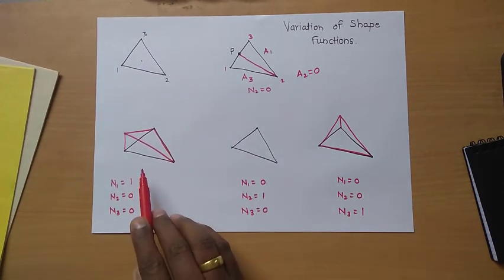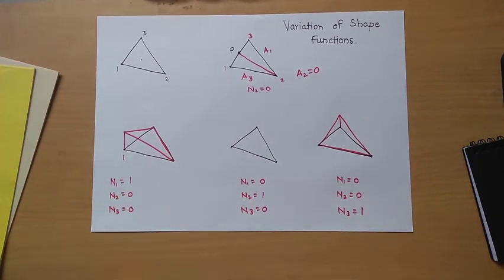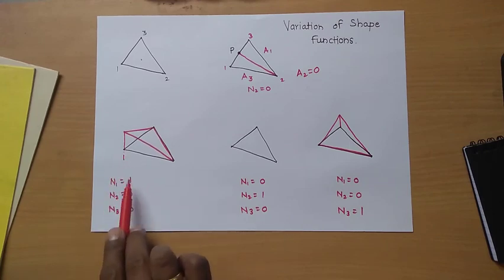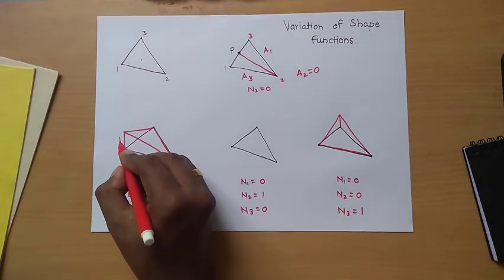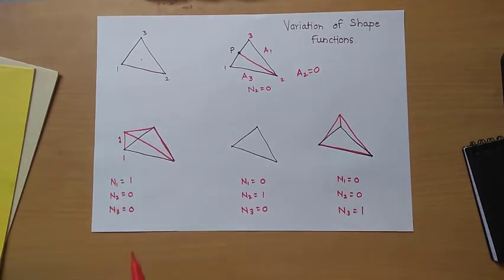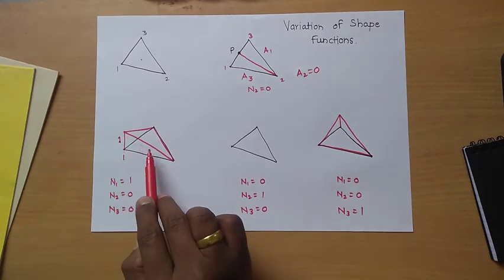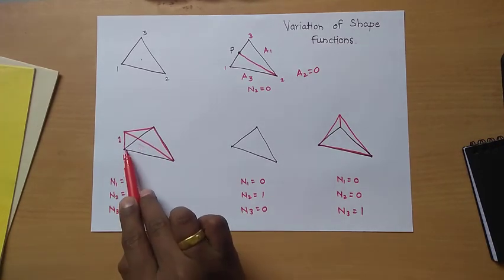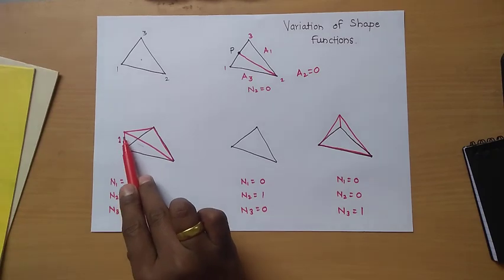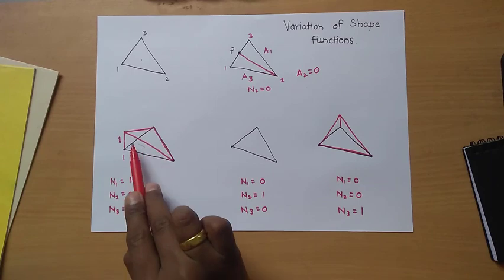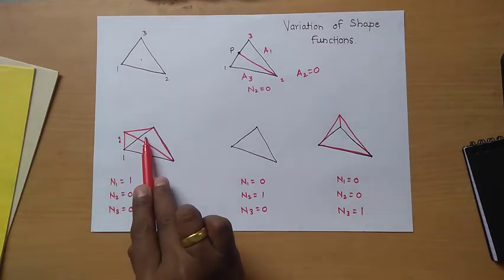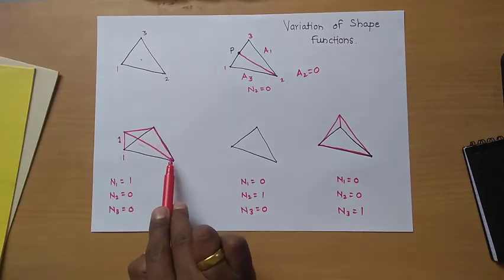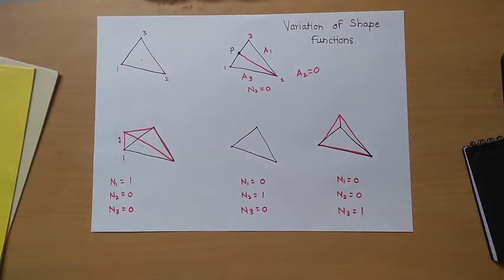The maximum value of shape function N1 is 1 at its own node — its magnitude is unity. As the point varies away from node 1, the value decreases linearly: from 1 at the node, to 0.5 somewhere in the middle, to 0.25 further along, and finally 0 on the opposite edge, as we have seen.